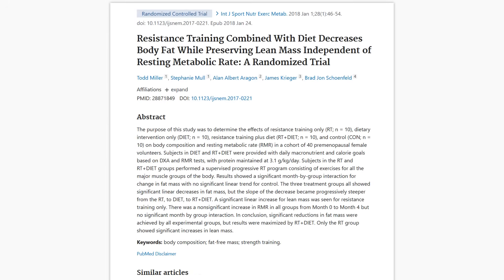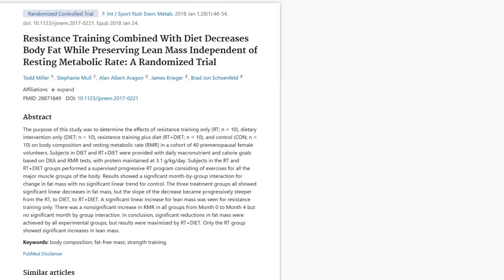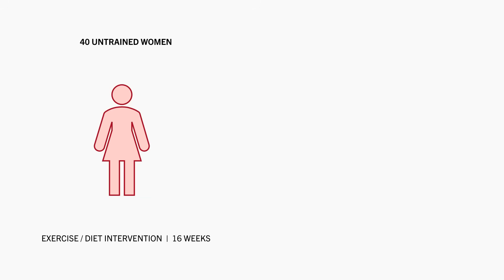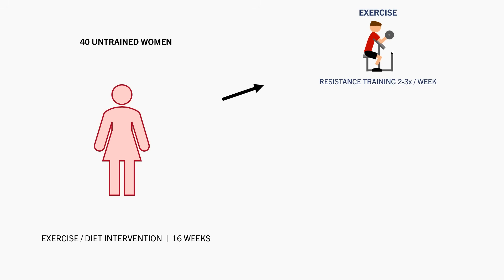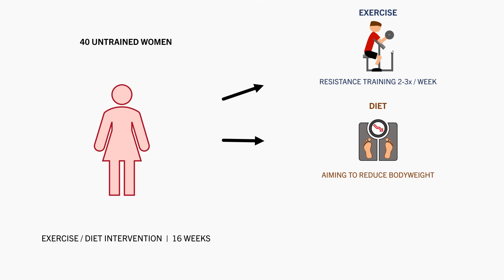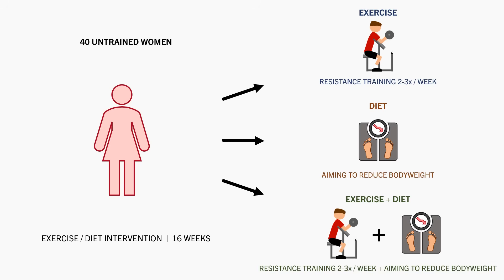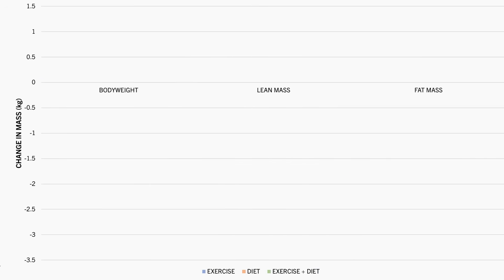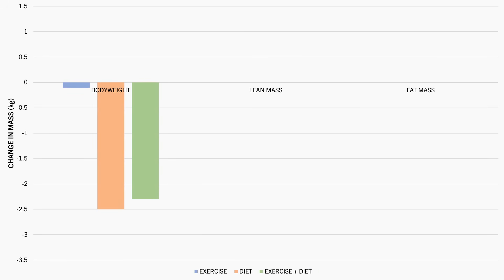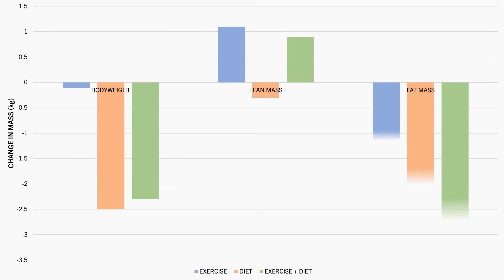For example, this study compared the effects of resistance training and/or a calorie deficit on body composition changes. 40 untrained females were assigned to one of three protocols for six weeks. One group performed resistance training two to three times per week while maintaining body weight. The second group worked with a dietitian to reduce body weight with no training. The third aimed to reduce body weight while also performing resistance training. The two groups dieting lost a little body weight while the maintenance group maintained weight. Lean mass increased in the two training groups, but the diet-only group lost a little. Total fat loss was greater in the two groups in a deficit compared with the training-only group.